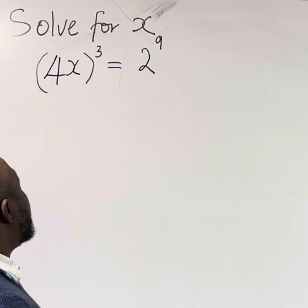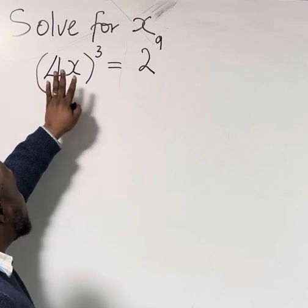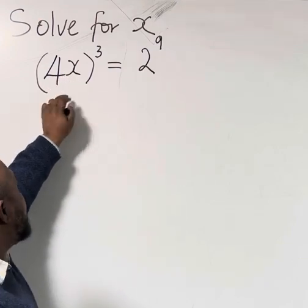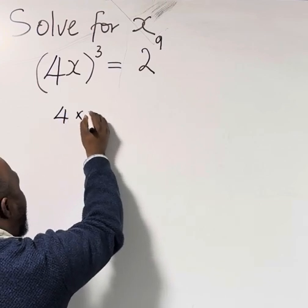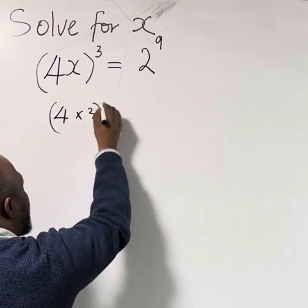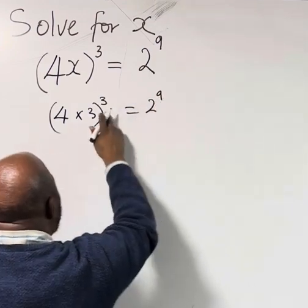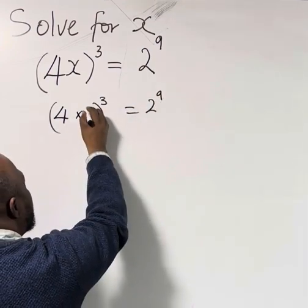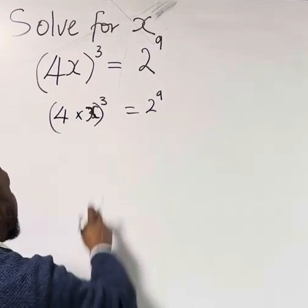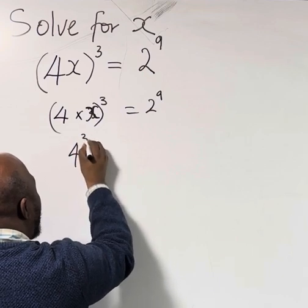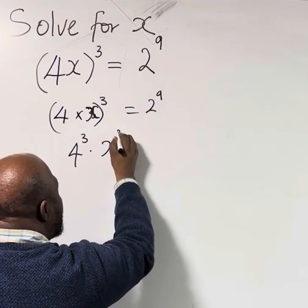The thing you need to know is how to break this down. The first thing we need to do is open this bracket, because this is the same as (4 × x)³ = 2⁹. So you can equally say this is 4³ × x³.